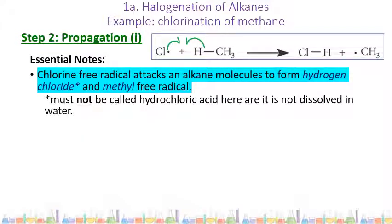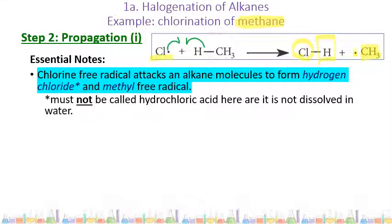Step two is propagation part one. The chlorine free radical produced in step one attacks an alkane molecule — in our case, methane. It forms a bond between the chlorine free radical and one of the hydrogens from the alkane, producing hydrogen chloride (HCl). Note: HCl is only called hydrochloric acid if it's aqueous, dissolved in water. We also produce a methyl free radical — methyl because it has one carbon, indicated by the dot showing it's a free radical.